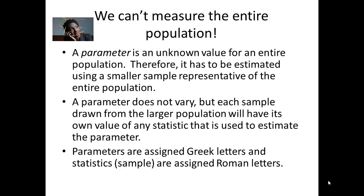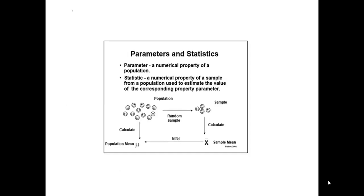Parameters are assigned Greek letters and statistics or the sample are assigned Roman letters. This is very important to remember. A parameter is a numerical property of a population and a statistic is a numerical property of a sample.